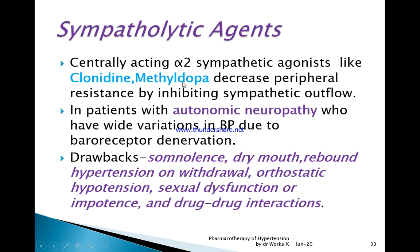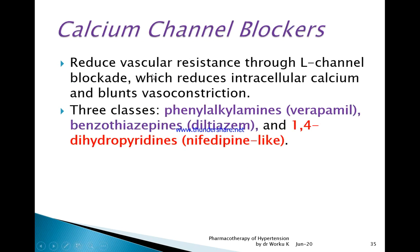Sympatholytic agents include central-acting alpha-2 sympathetic agonists like clonidine, methyldopa, guanfacine, and reserpine, which decrease peripheral resistance by inhibiting sympathetic outflow. In patients with autonomic neuropathy who have wide variations in blood pressure due to baroreceptor denervation, these sympathomimetic drugs are recommended. Drawbacks include somnolence, dry mouth, rebound hypertension on withdrawal due to their short duration of action, orthostatic hypotension, sexual dysfunction, and drug interactions.